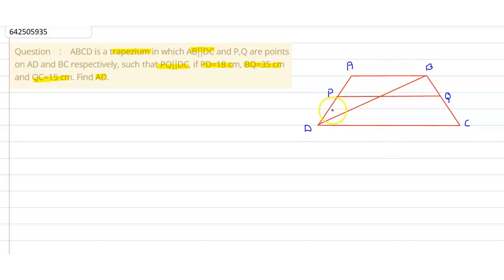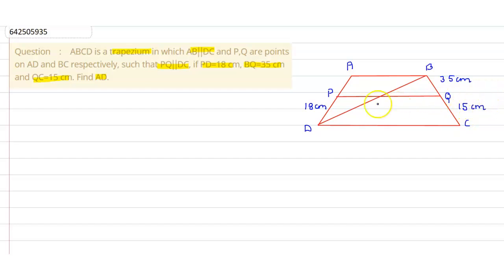It is given that PD is 18 centimeters, BQ is 35 centimeters, and QC is 15 centimeters. We have to find AD, so to find AD we need to find AP. Let's name the intersection of the diagonals as O.